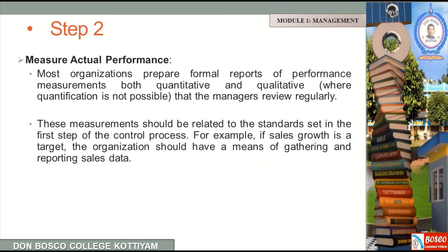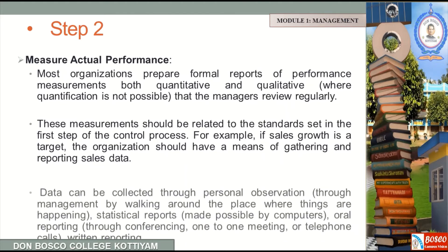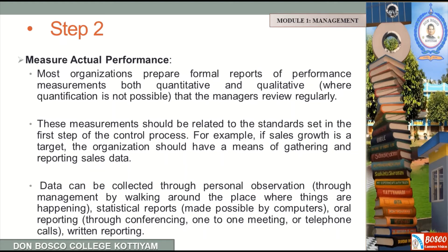These measurements should be related to the standards set in the first step of the controlling process. For example, if sales growth is a target, the organization should have a means of gathering and reporting sales data. Data can be collected through personal observation, management walking around, statistical reports, and written reporting.